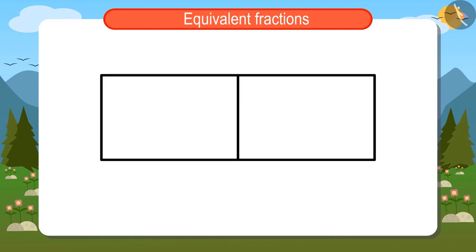Now in order to find the two-fourths of this rectangle, first I will divide it into four equal parts. Now two of these four parts will be two-fourths of this rectangle.